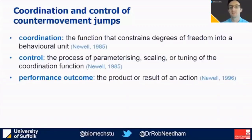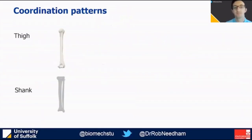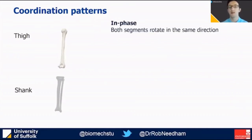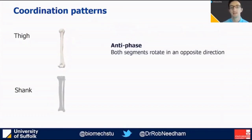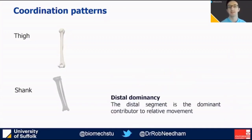I've put some definitions up on screen, but for example intra-individual coordination refers to the coupling relationship between body segments. Measures of control include amplitude, velocity, acceleration and force, and both coordination and control lead to the performance outcome. Example coordination patterns include in-phase coordination where both segments rotate in the same direction, antiphase coordination where both segments rotate in opposite directions, proximal dominancy where the proximal segment is the dominant contributor, and distal dominancy where the distal segment is the dominant contributor.